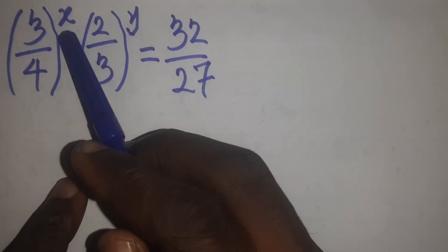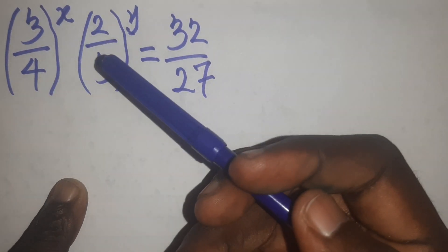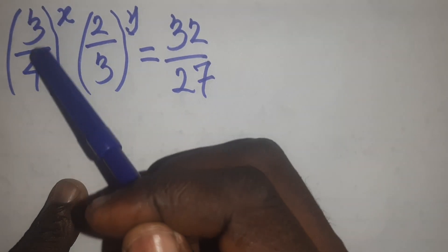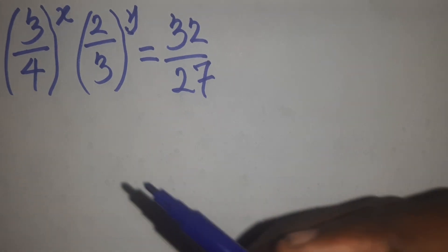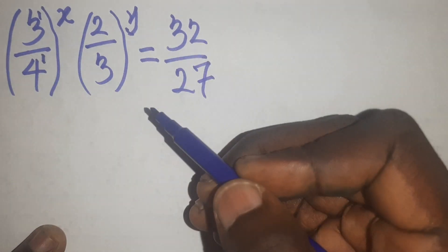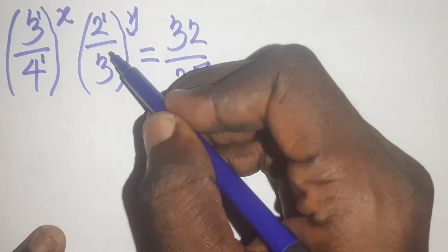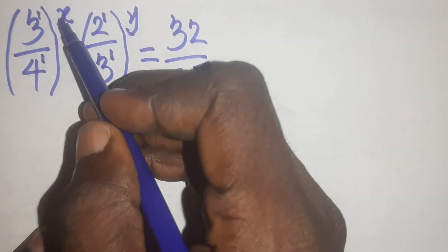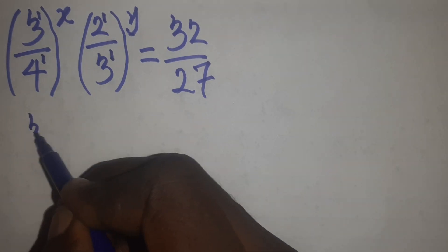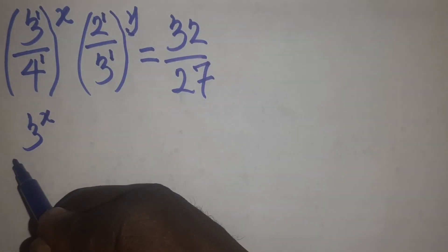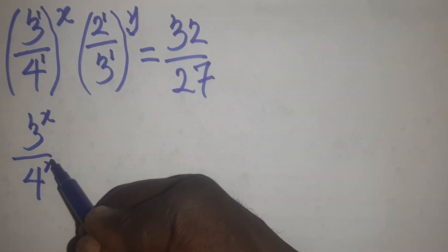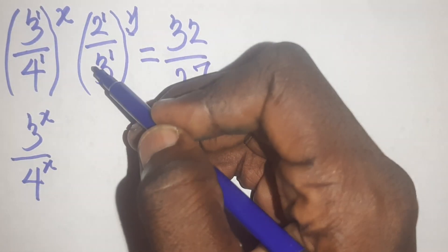We can open the bracket. We know one of the rules of indices where we use the power outside to multiply the powers inside the brackets. We know that 3 has a power of 1 and likewise 4 has a power of 1. So I write my 3 and then x times 1 is x over, then I write my 4 and x times 1 is x.